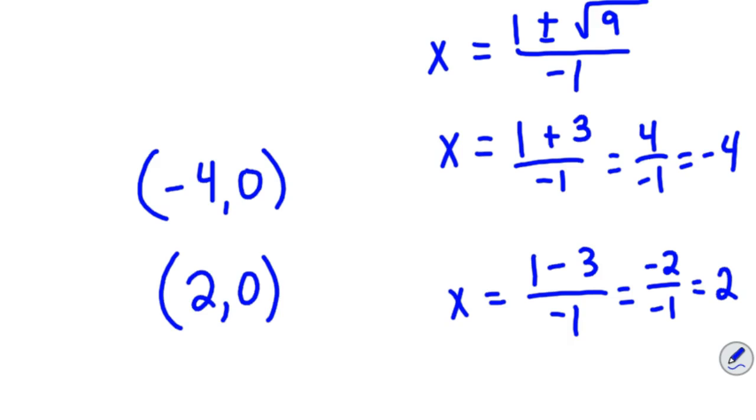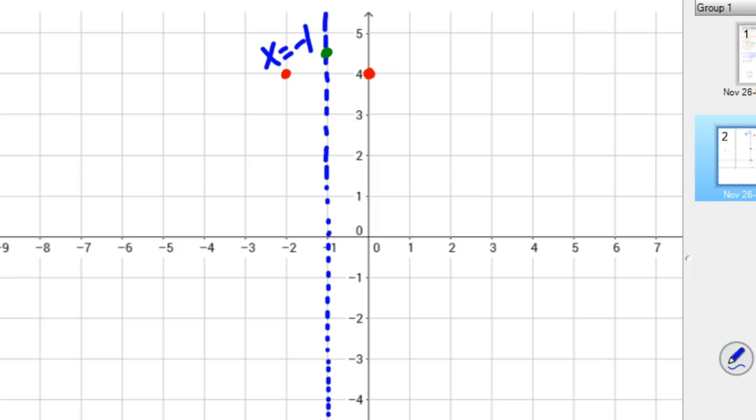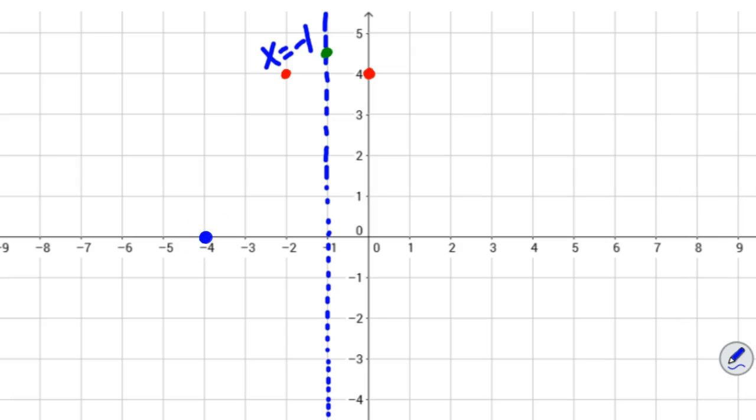And so we'll graph those. And so negative four zero is right there, two zero right there. And you notice our axis of symmetry, we should have the same distances to these x-intercepts. And if you see that, if you notice there is indeed three points on both sides, I'm just putting those in there to point that out to you, that it should all match up with my axis of symmetry.